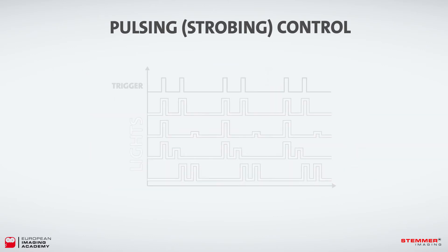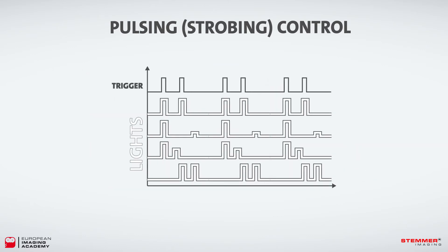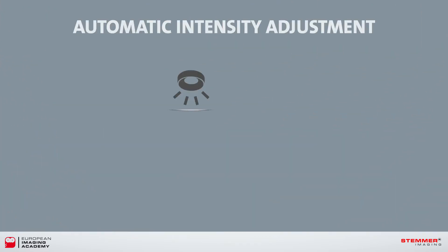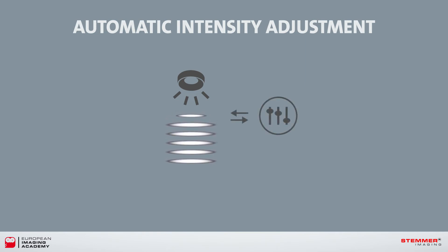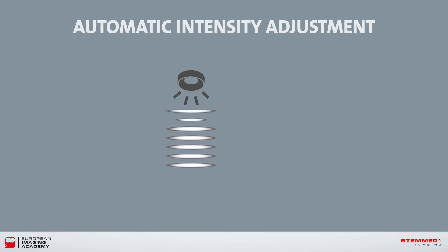A series of pulses at different widths and intensities can be used for different lights, all of which can be grouped into sequences. This can be reset in the controller to ensure it's always in sync. By using an intensity check within the image processing software, the brightness of the light can be monitored. This can then be fed as a signal to the controller to dynamically alter the brightness of the lights, enabling automatic adjustment to maintain lighting levels.